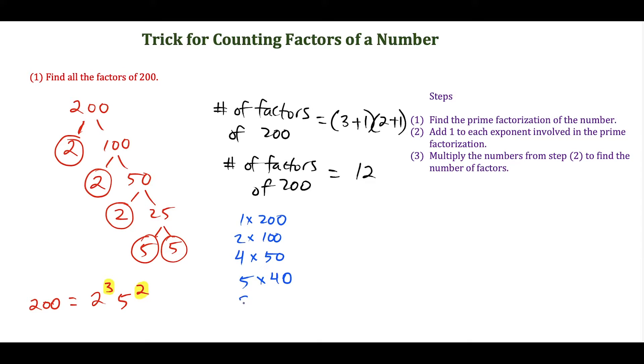The next one is 8 times 25 equals 200, and the last pair gives us 10 times 20. I know I'm done here because we have 12 factors listed. Now we just write our answer formally in a set.